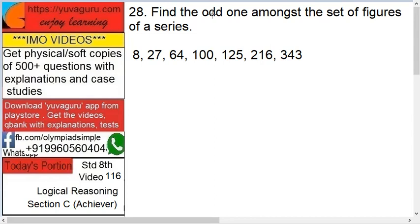Find the odd one amongst the set of figures in the series. See, this is the series and we have to find the odd one: 8, 27, 64, 100, 125, 216, 343. Do you see any commonality between these?